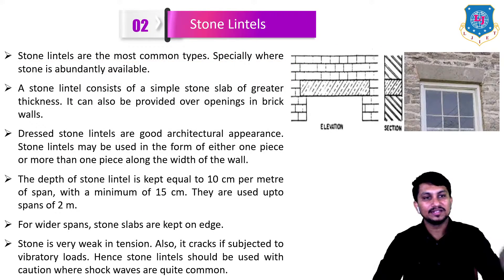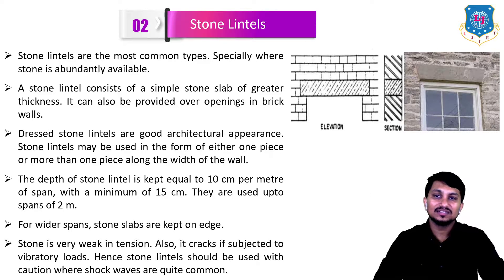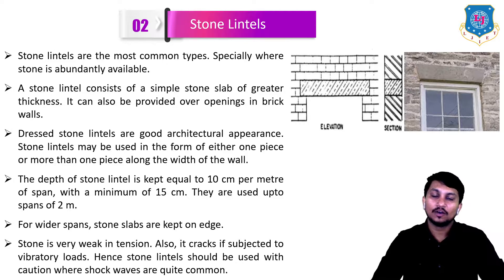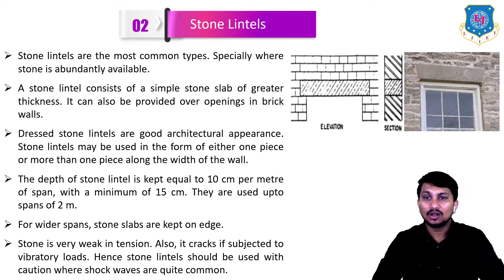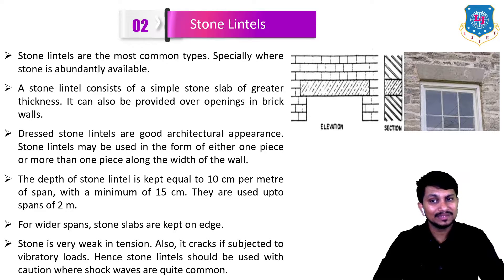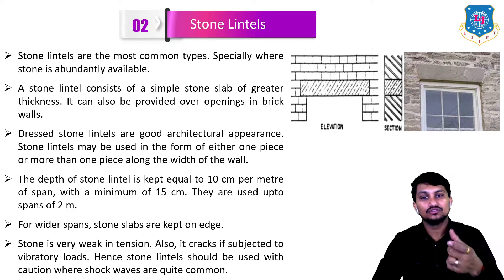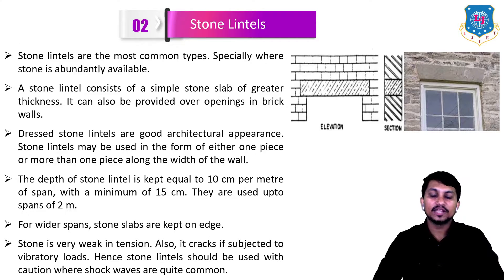Stone lintels are the most common type of lintel, especially where stone is abundantly available. A stone lintel consists of a simple stone slab of greater thickness and can also be provided over openings in brick walls. Dressed stone lintels have a good architectural appearance. The depth of a stone lintel is kept equal to 10 centimeters per meter of span, with a minimum of 15 centimeters.